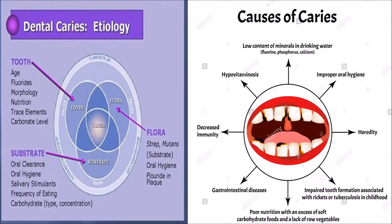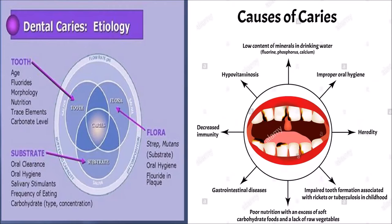The causes of caries include low mineral content in drinking water — it could be fluoride, phosphorus, or calcium — improper oral hygiene, hereditary factors, impaired tooth formation, poor nutrition, gastrointestinal diseases, decreased immunity, and hypovitaminosis, which means less amount of vitamins as the tooth is growing. That is what causes dental caries.